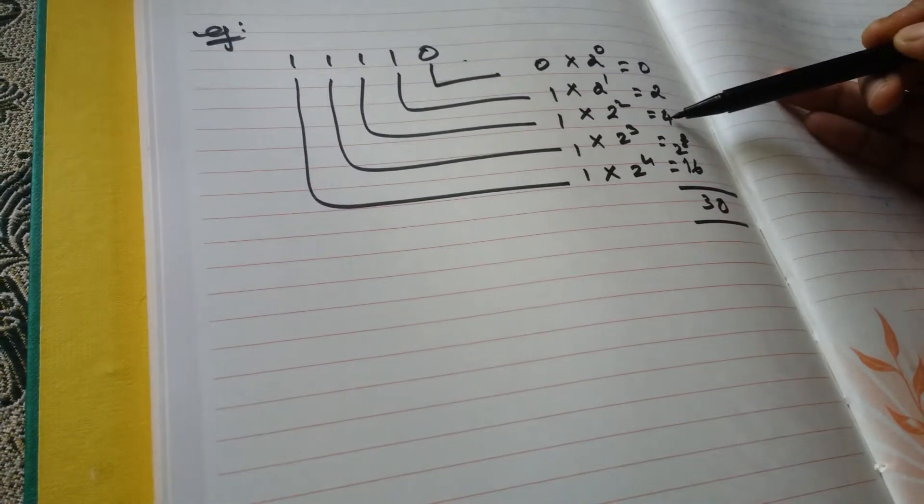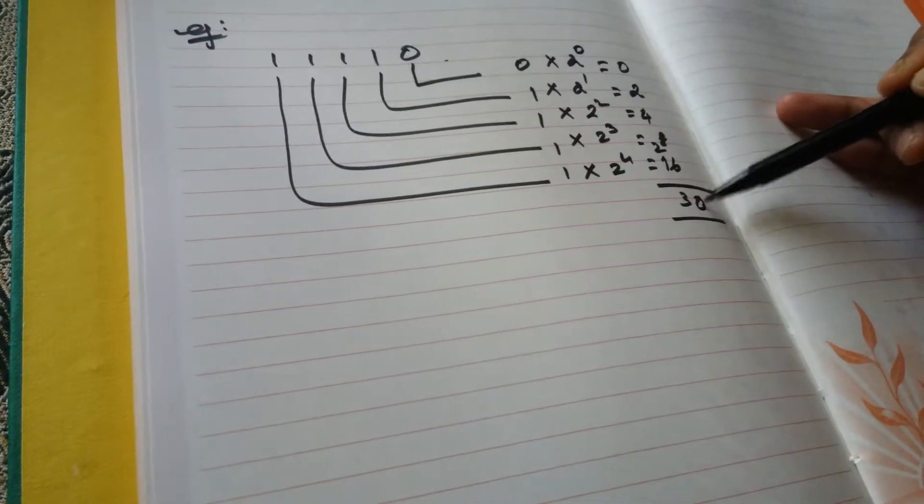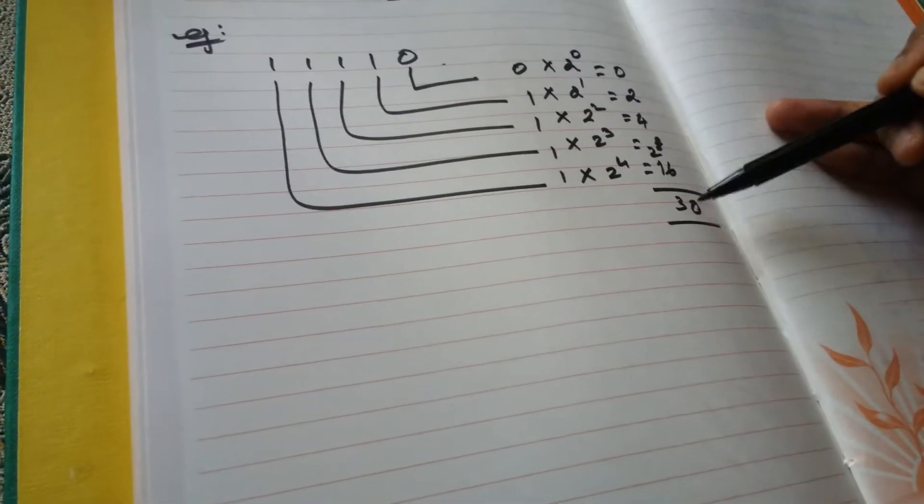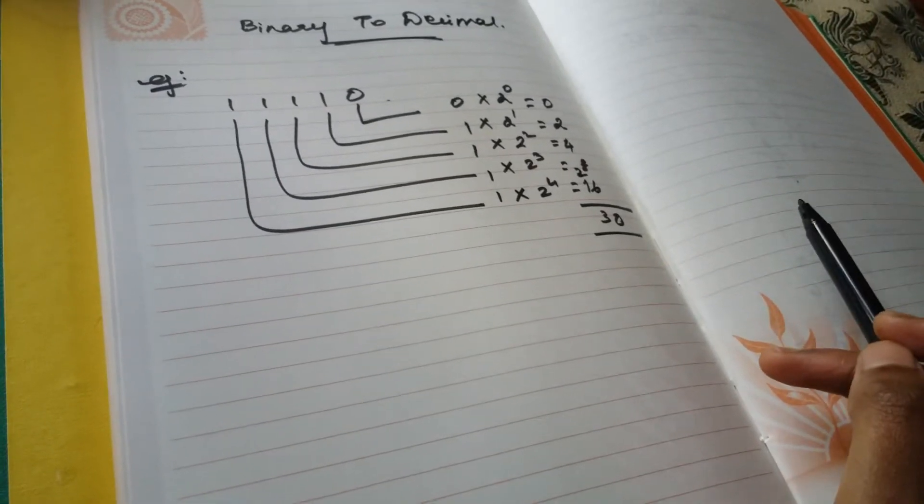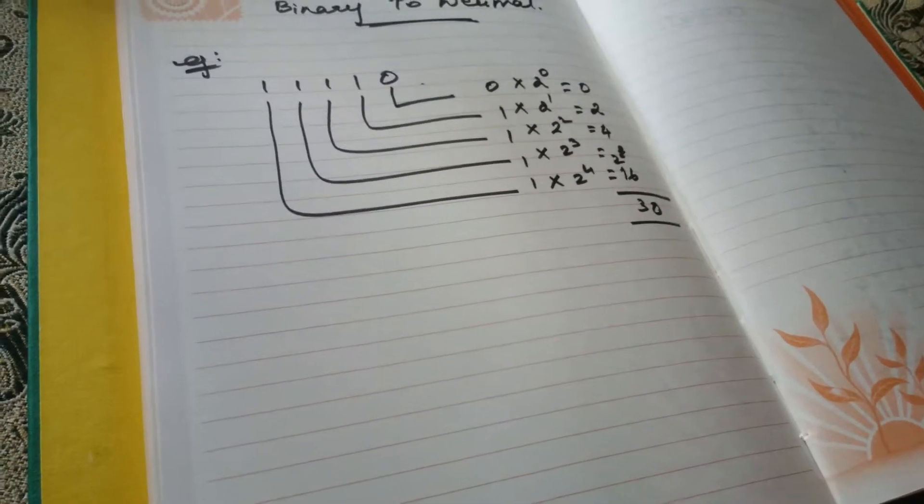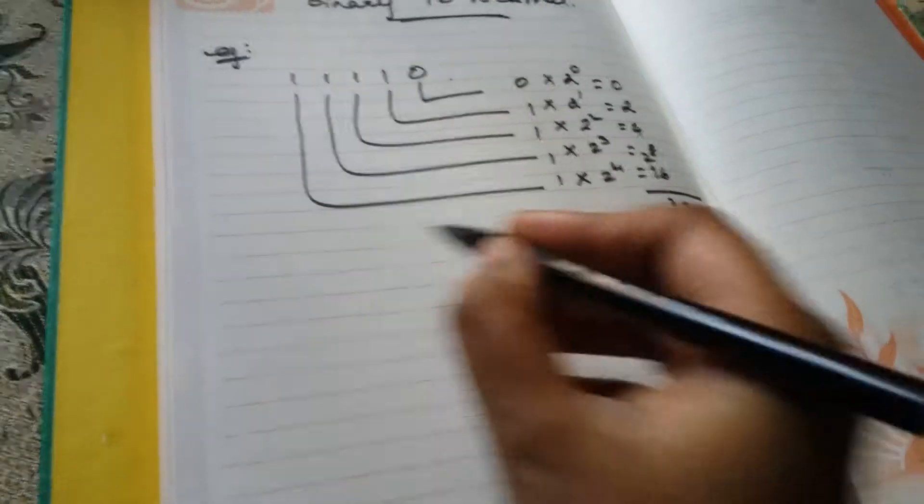So when you add it, six plus eight is fourteen, fourteen plus four is eighteen, eighteen plus two is twenty. So zero and carry two. Two plus one is three. So you'll get thirty as your decimal. So this is very simple.